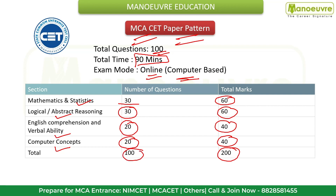Every year, 45,000 plus aspirants appear for the Maharashtra MCA CET entrance exam. The cutoff varies depending on the number of applicants and the difficulty level of the paper. So gear up with your MCA CET preparation and start early in order to achieve a good score in the first attempt.